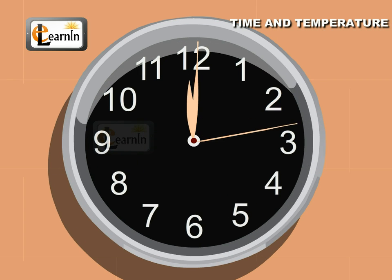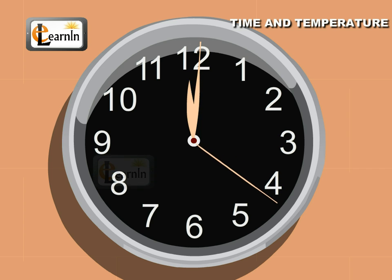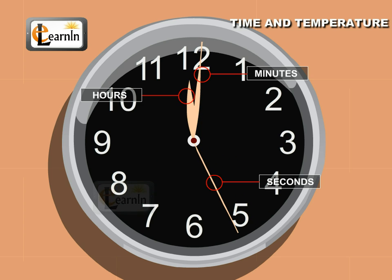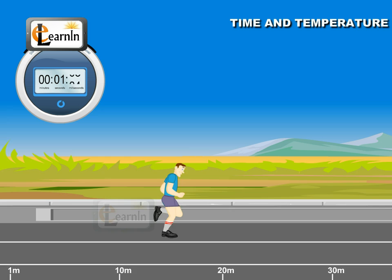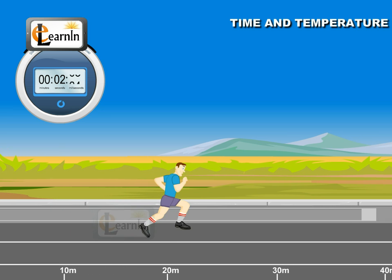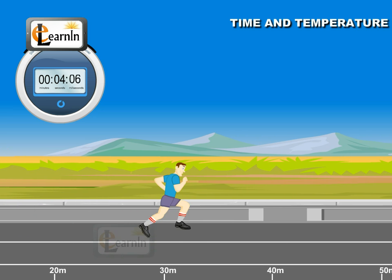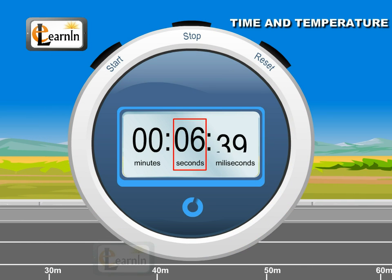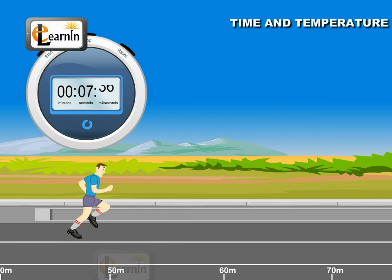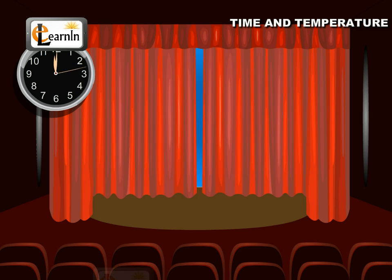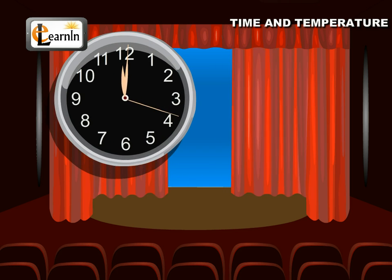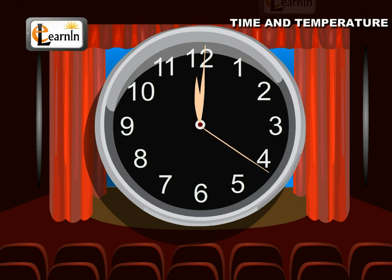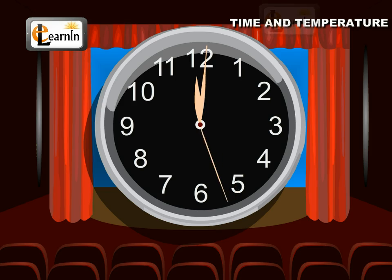Let's look at the units of time first. Generally, time is measured in seconds, minutes, and hours. A 100 or 500 meter running race would be measured in seconds and minutes, while the length of a movie would be measured in hours. The unit of measurement of time depends on the duration of the activity being measured.